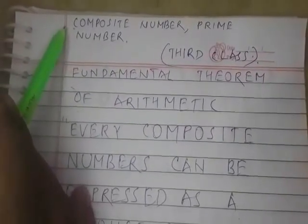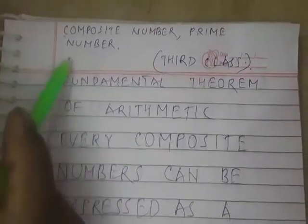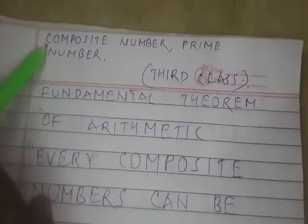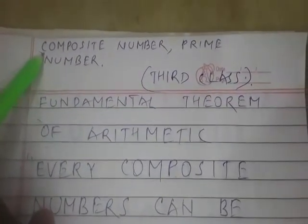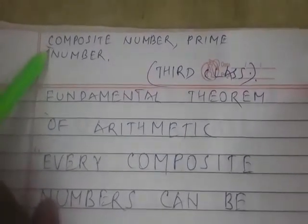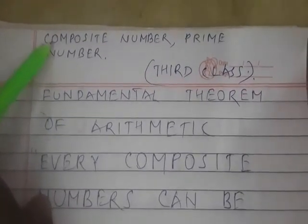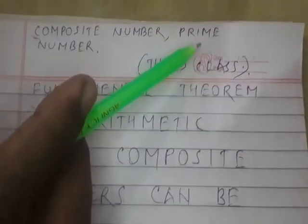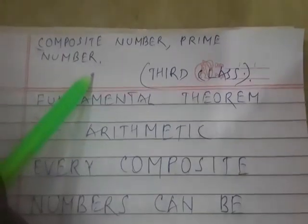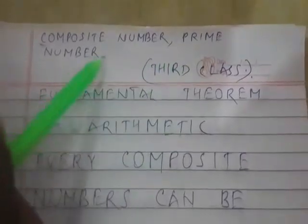I am just reminding you what a composite number is. A number is said to be composite if it has more than two factors. The smallest composite number is four, because it has three factors: one, two, and four. A prime number is a number which has two and only two factors. The smallest prime number is two.